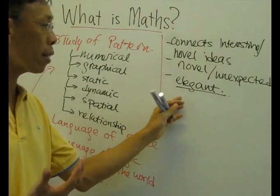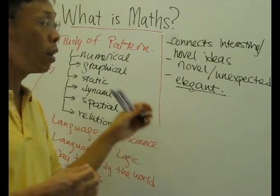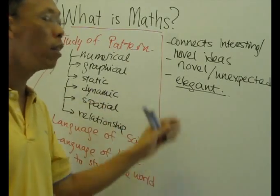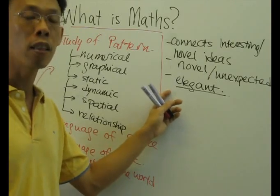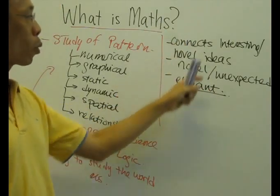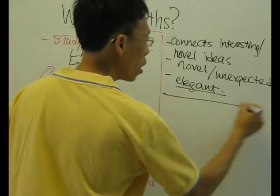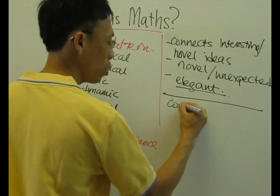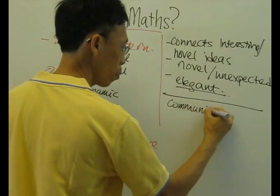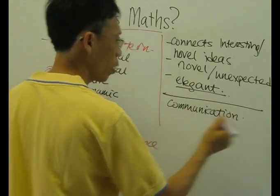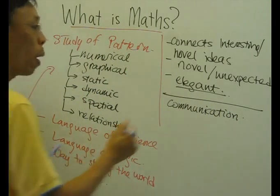And if you can simplify it, and you can see some patterns, or collect patterns together, collect similar patterns together, to make it more elegant, this is preferable. So, here, good mathematics should be elegant. And mathematics is also about communication.